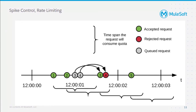Spike control and rate limiting are mainly helpful in case of denial of service and DDoS attacks. These are the most commonly used as well, mainly for experience APIs — APIs exposed to the front-end. That's the place where we can make use of rate limiting, especially if we're expecting large numbers of requests, mainly in case of e-commerce sites.